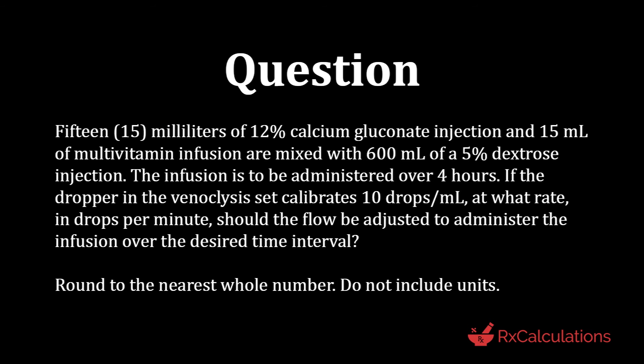This question says 15 milliliters of 12% calcium gluconate injection and 15 milliliters of multivitamin infusion are mixed with 600 milliliters of a 5% dextrose injection. The infusion is to be administered over 4 hours. If the dropper in the venoclysis set calibrates 10 drops per milliliter, at what rate in drops per minute should the flow be adjusted? Round to the nearest whole number; do not include units.